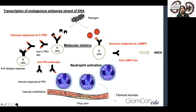According to the molecular mimicry theory, there is a molecular similarity between the bacterium Fimh and lysosomal-associated membrane protein 2, producing anti-LAMP2 antibodies. Anti-LAMP2 antibodies, in a similar fashion to anti-PR3 antibodies, bind to the neutrophils, causing further neutrophil activation.